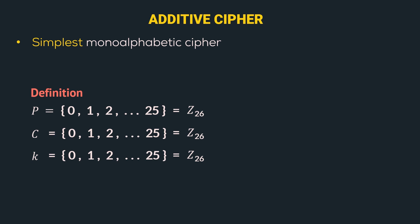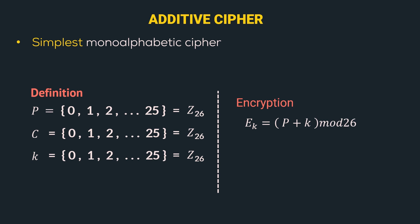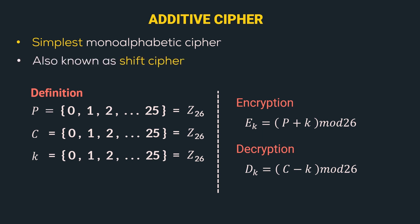Having defined this, let's look at the encryption and decryption algorithms. The encryption algorithm formula is E(k) = P + K mod 26, and the decryption algorithm is D(k) = C − K mod 26. We can see that while encrypting we are shifting the alphabets forward, and while decrypting we are shifting the alphabets backwards. Hence, it is also called a shift cipher.